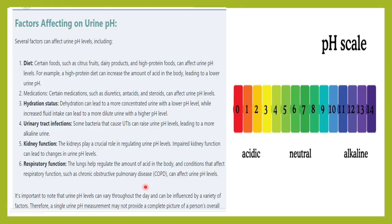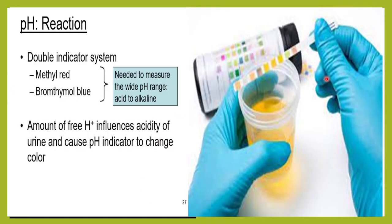The urine pH varies throughout the day, so a single urine pH measurement may not provide the complete picture of the patient's health status. When we measure urine pH nowadays, we use a reagent strip with a double indicator system — meaning there are two indicators: methyl red and bromothymol blue. We use two indicators because we have to measure a wide pH range.